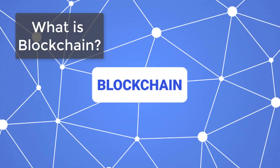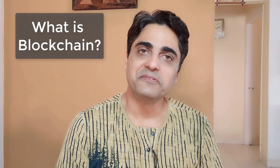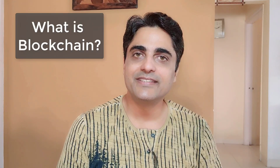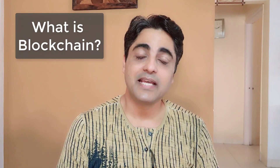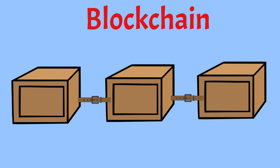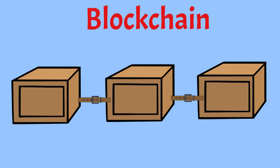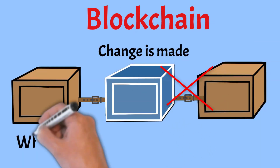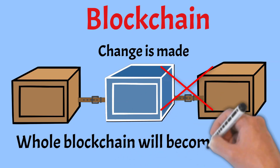A blockchain is a way of storing information where the information on the blockchain cannot be changed, manipulated, or tampered. As the name suggests, a blockchain is a chain of blocks that are linked to one another. And if any changes are made in any of the blocks, the whole blockchain will become invalid and the change will be rejected.